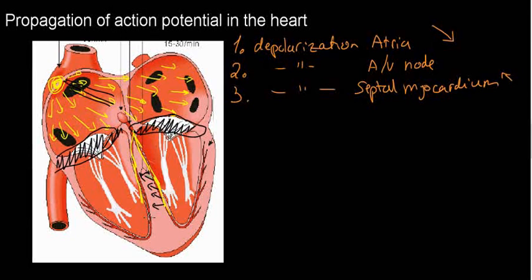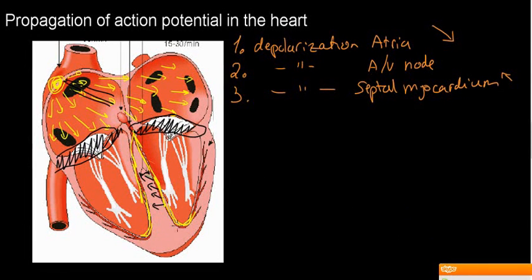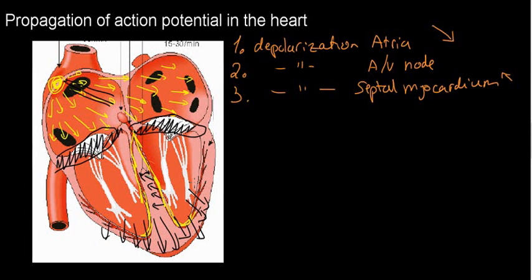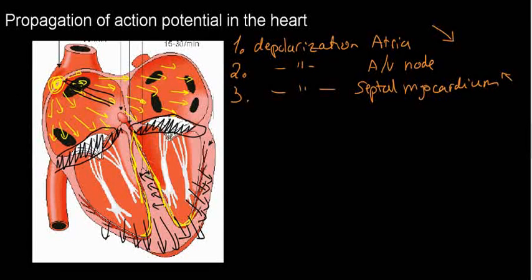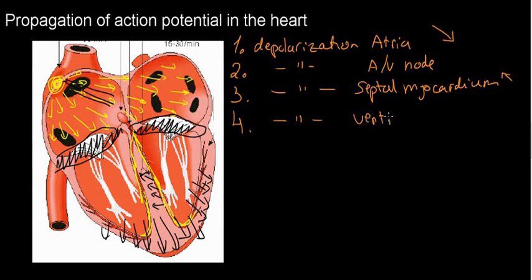The next stage is a very, very big event. We have all of these bundle branches depolarizing the ventricles — this is really the major event. The propagation of the action potential goes every which way through the ventricles. If I add up all of these vectors, I'm going to get this general direction. This vector is going to be considerably bigger than the atrial vector because the atria are considerably smaller than the two ventricles. So the fourth event is the depolarization of the ventricles in this general direction.